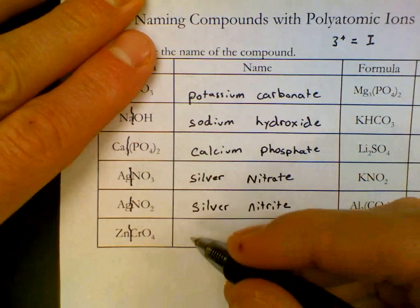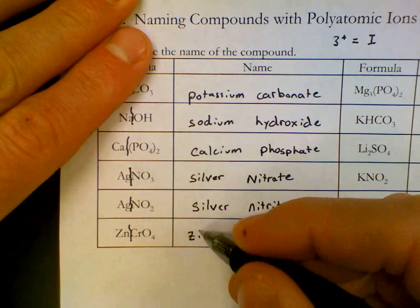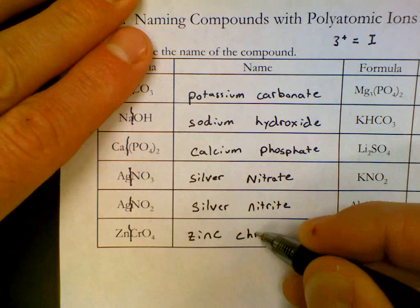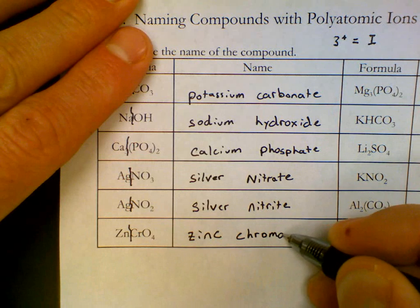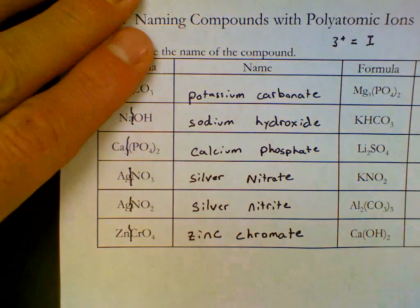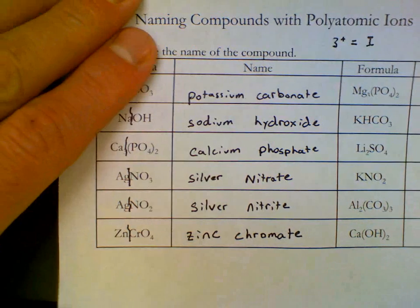CrO₄ is chromate after we write down zinc. Zinc chromate. And that's the right-hand side, or the left-hand side of our sheet. On the right-hand side, again, you can split after the first atom.